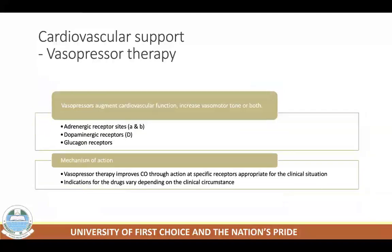If volume expansion does not restore blood pressure, vasopressor therapy is the second stage. In patients with severe hypotension, vasopressors are necessary when blood pressure is not satisfactorily improved after volume expansion. Vasopressors are drugs administered to maintain cardiac output by augmenting myocardial function, increasing vasomotor tone, or both. With rare exceptions, vasopressors are short-acting drugs given by continuous IV infusion.